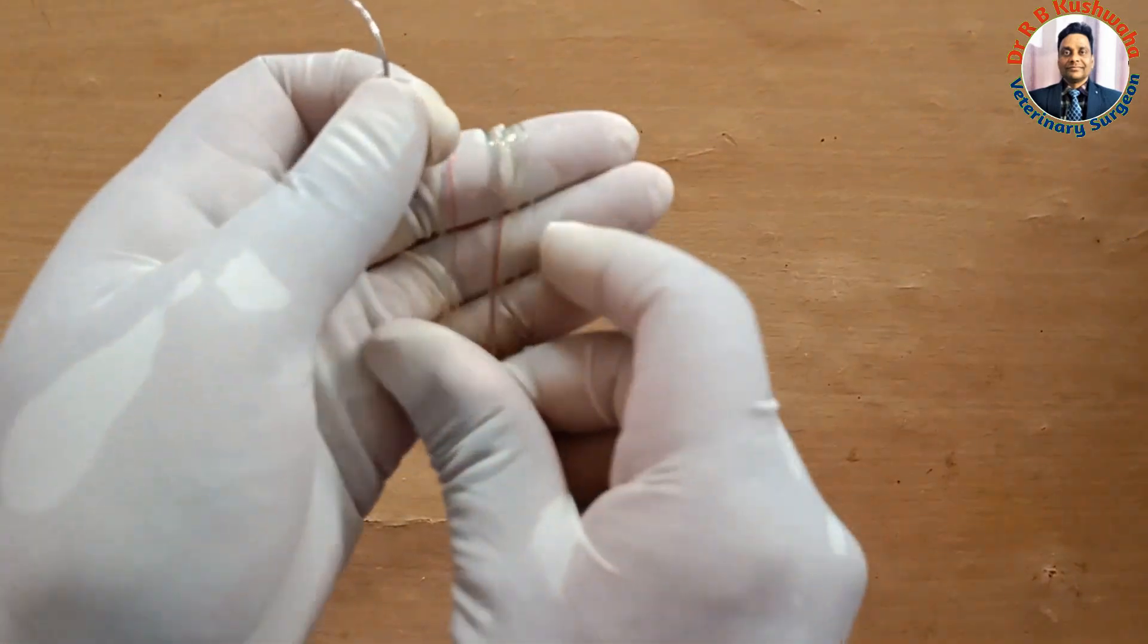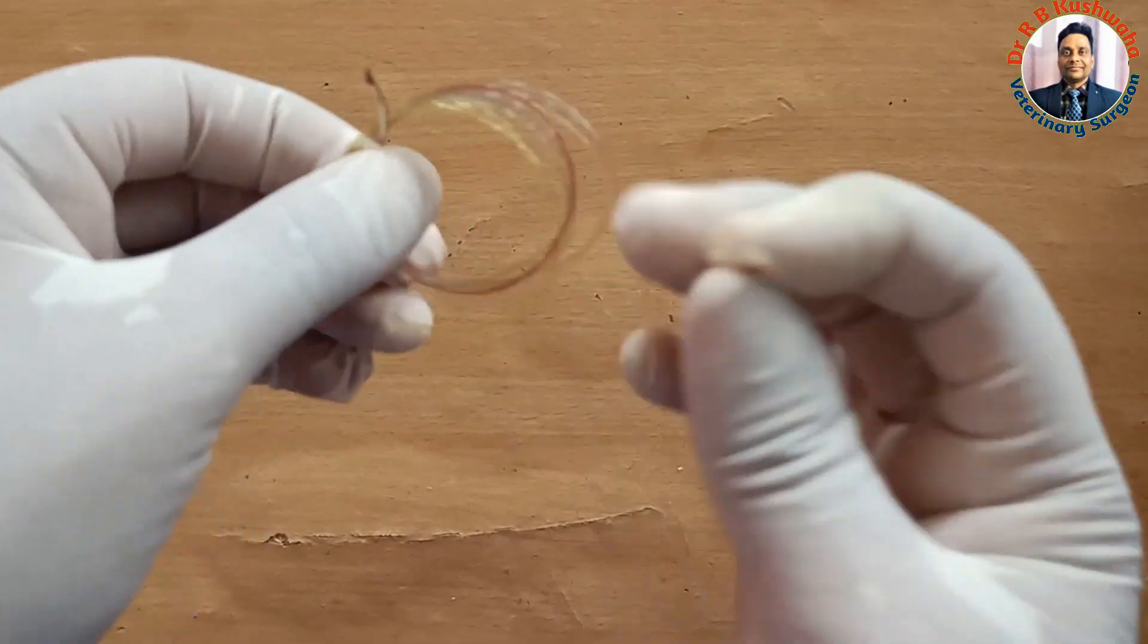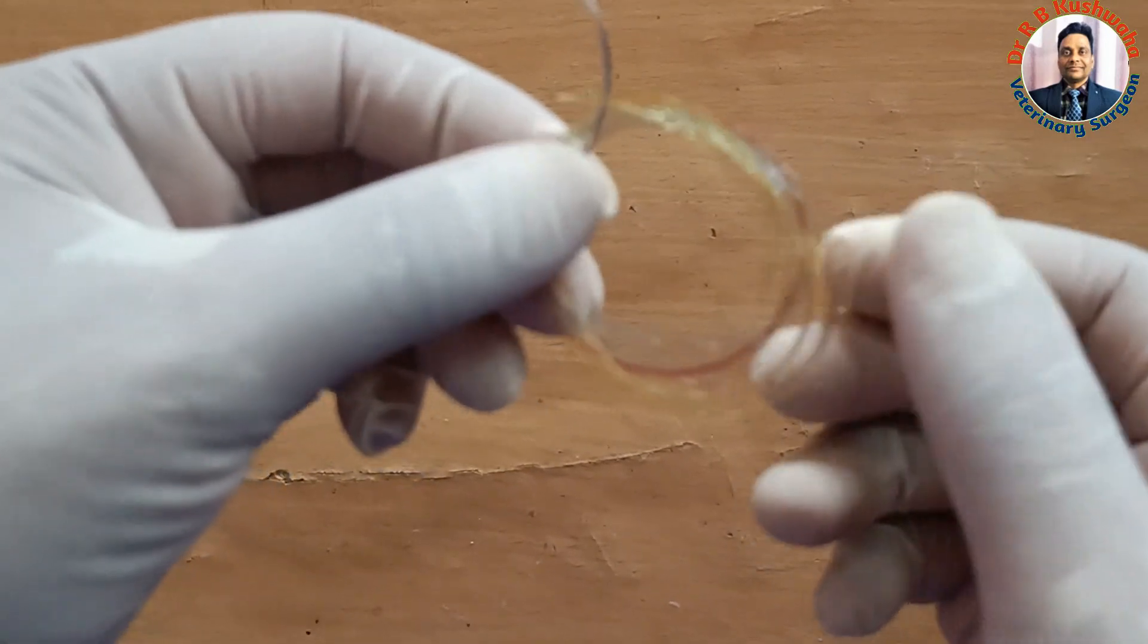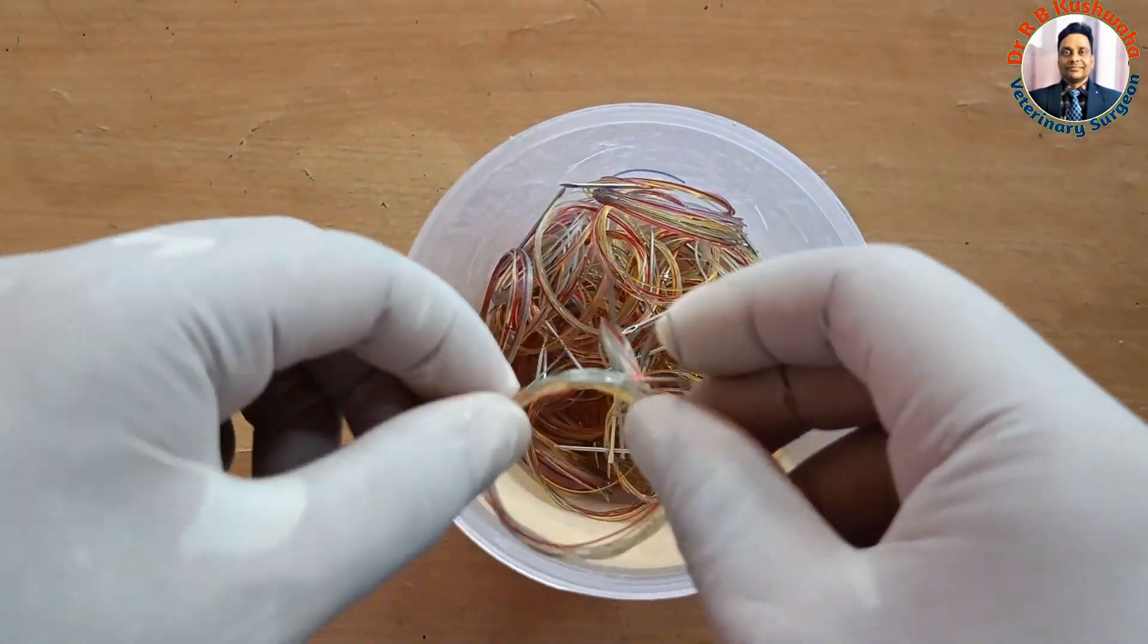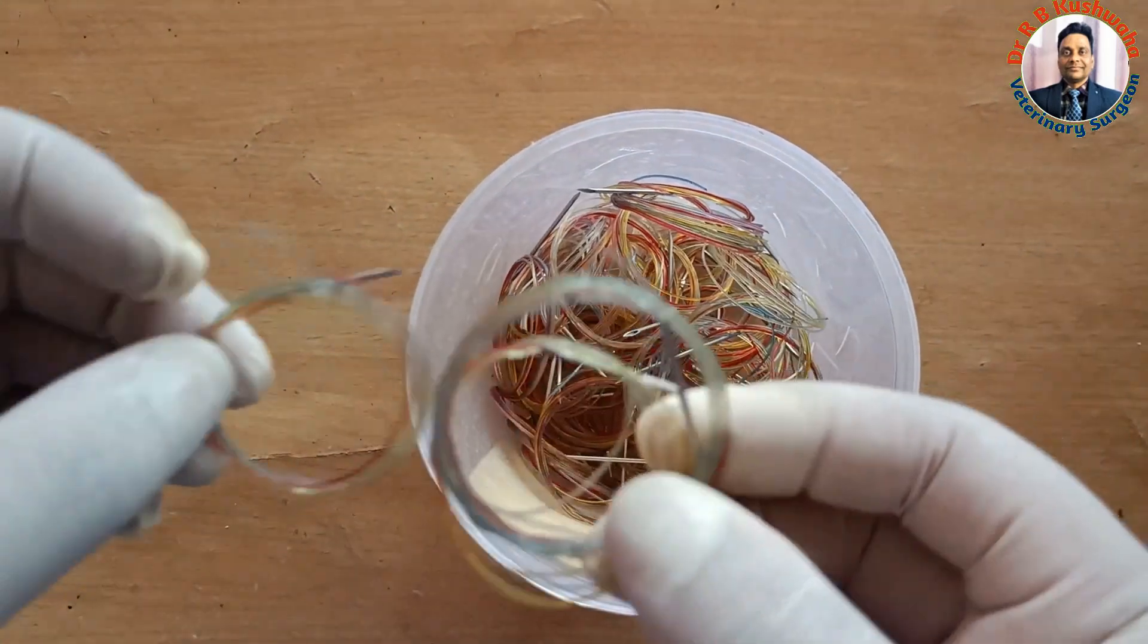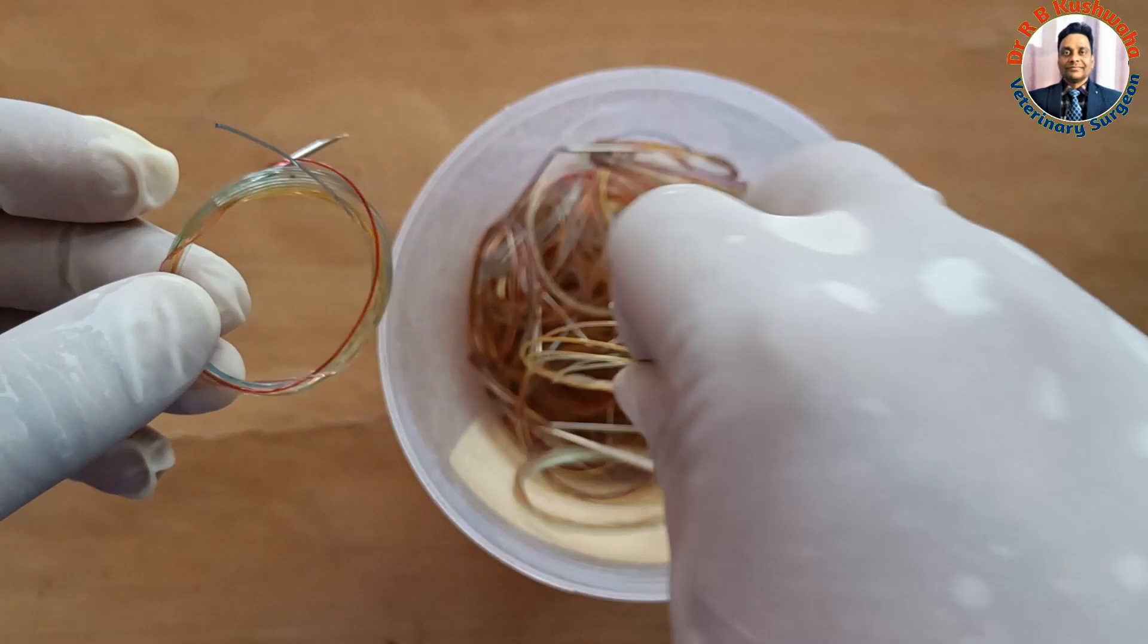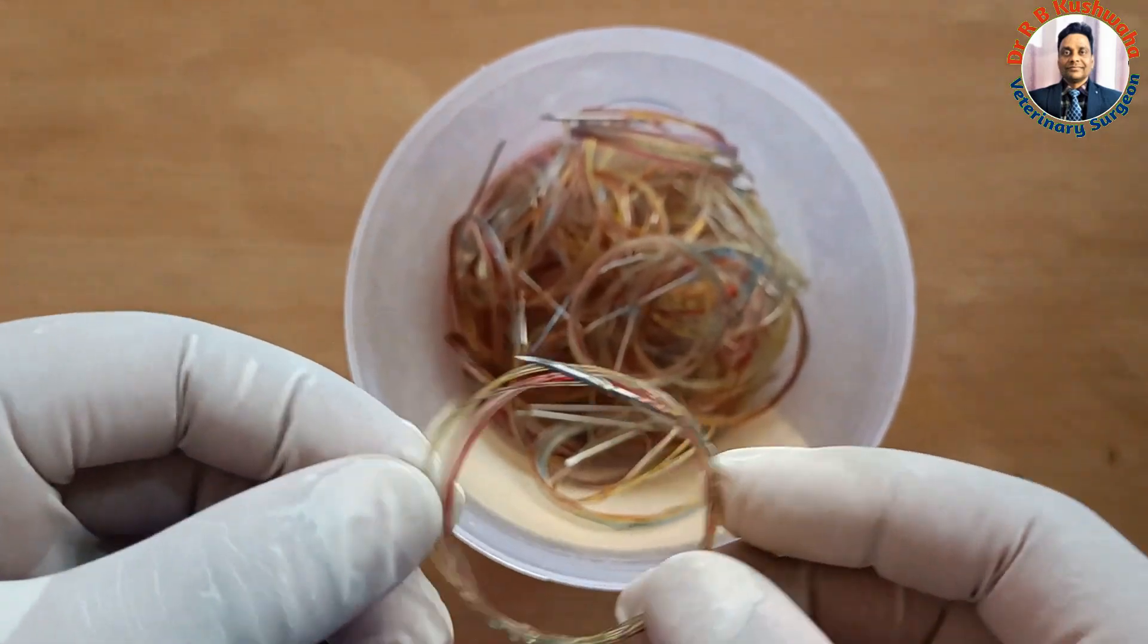Again you just make a loop like this because it causes problems in the suturing to handle longer thread. Normally we cut only 90 centimeter, 80 centimeter. We made different sizes of swaged needle using different sizes of nylon diameter.